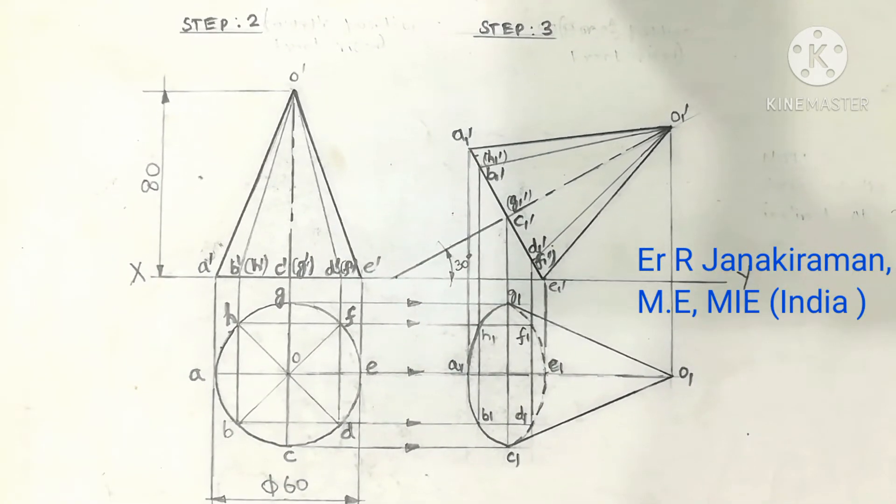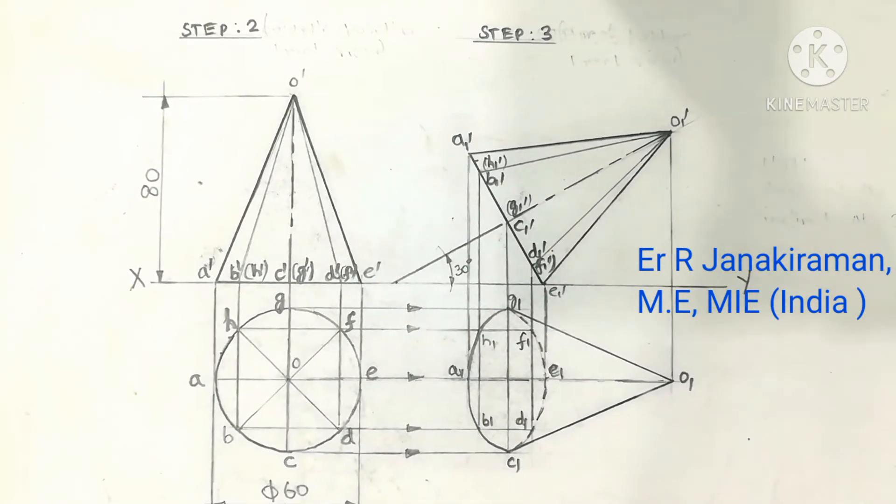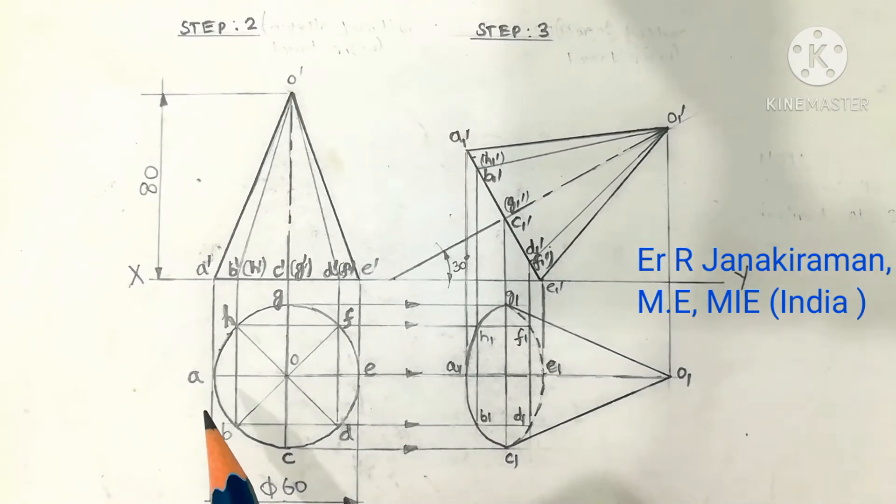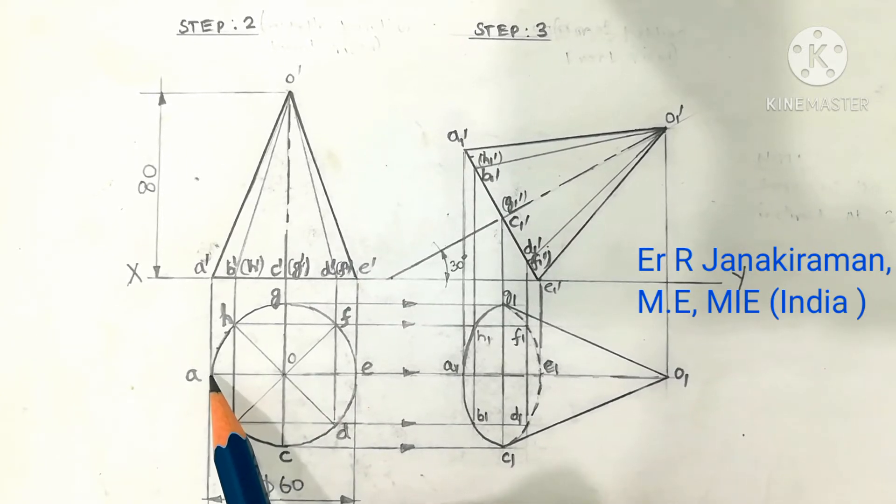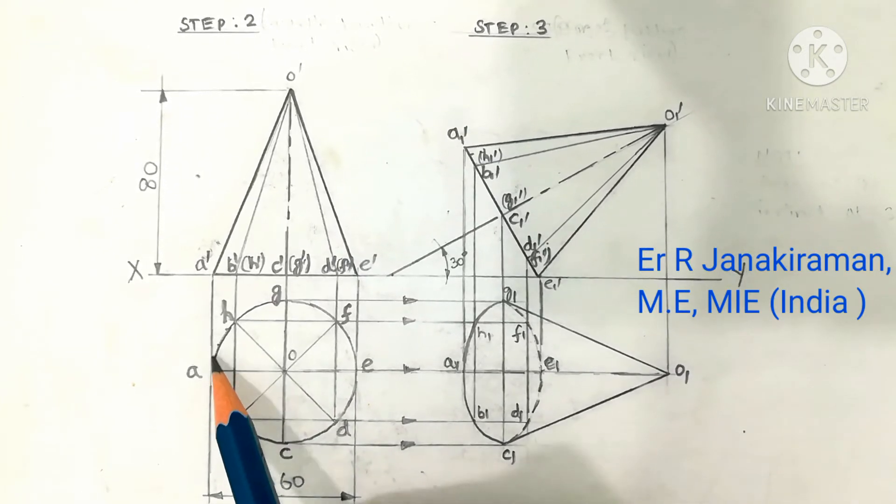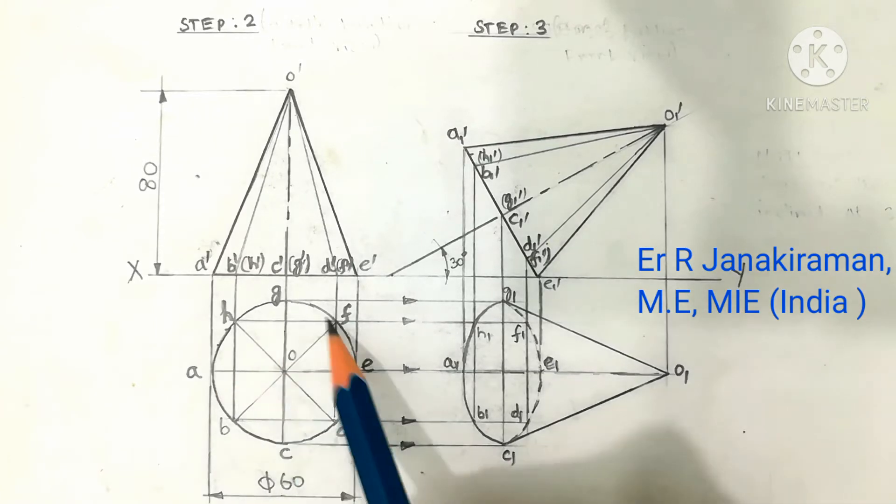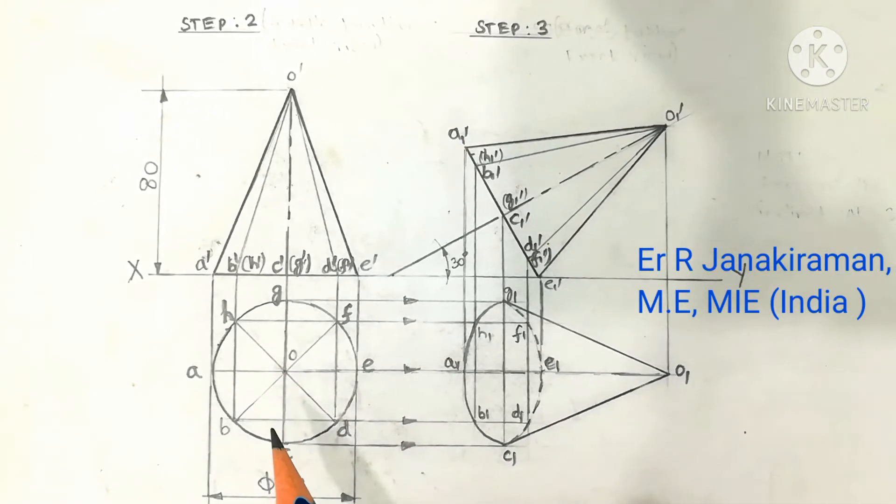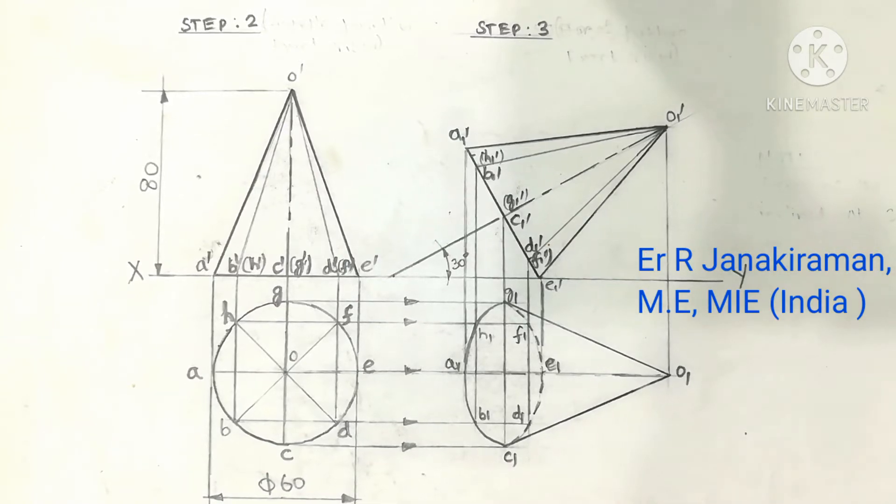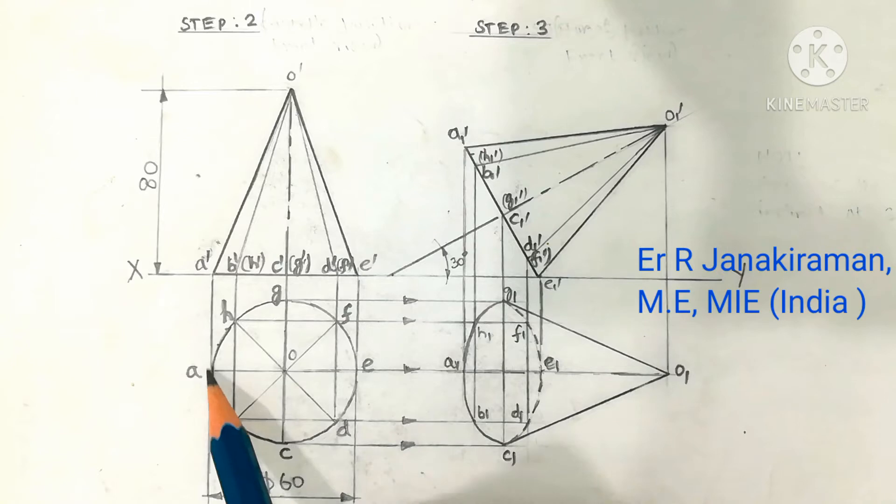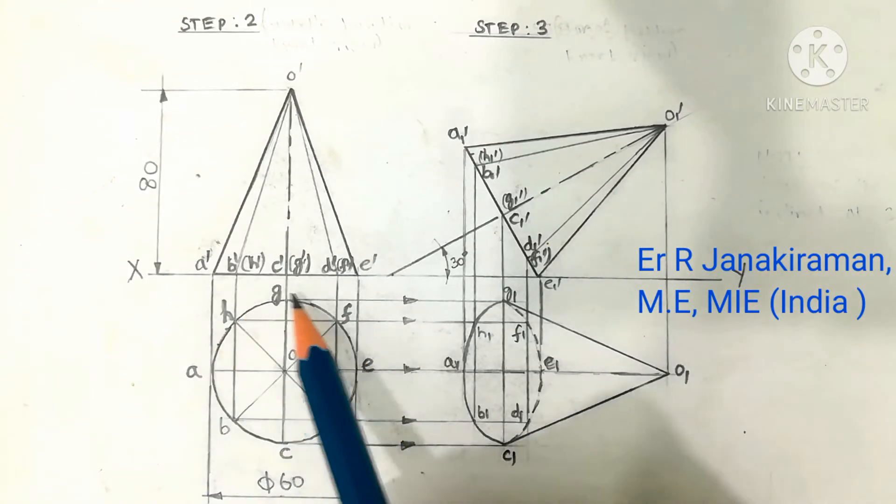For example, diameter is given as 60 mm. 60 mm is the diameter of the circle and radius will be 30 mm. So radius will be half of the diameter. If we are drawing the 60 mm diameter circle in reduced scale, the diameter is 30 mm and the radius will be 15 mm.